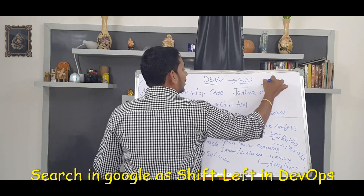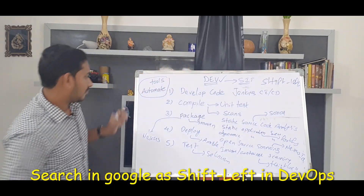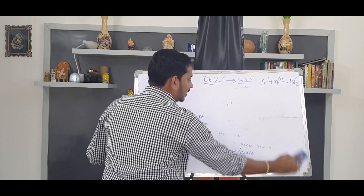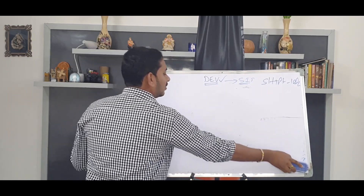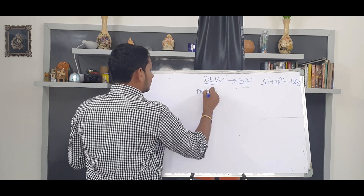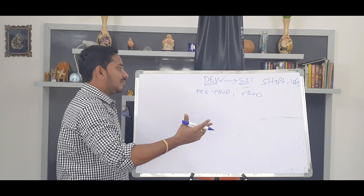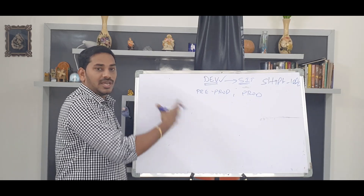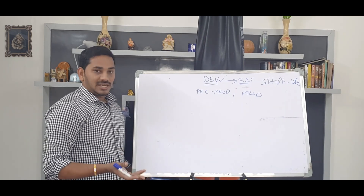So the first key procedure is 'shift left.' In the old days, the application was developed in the dev environment, tested in pre-production, and only security checks and scanning were done in the production environment. That means defects were found only when the code reached a public location, causing damage.